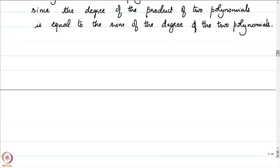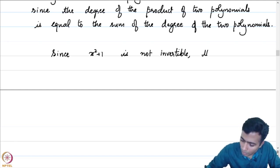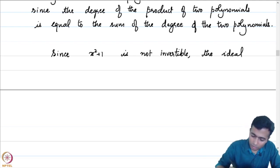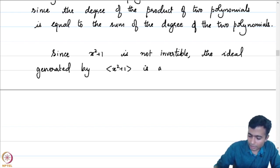Since the degree of the product of two polynomials equals the sum of the degrees, and the degree is always a non-negative number, non-constant polynomials can never have an inverse. So this is a commutative ring which is not a field. Therefore we can talk about ideals. Let us take the polynomial x squared plus 1. Since x squared plus 1 is a non-constant polynomial, it is not invertible, and the ideal generated by x squared plus 1 will be a non-trivial ideal.